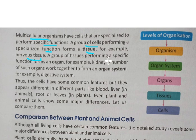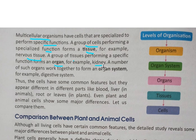Each group of tissues performing a specific function forms an organ. For example, the kidney is an organ. The kidney filters blood, and inside the kidney there are many tissues present that work together to make the kidney.